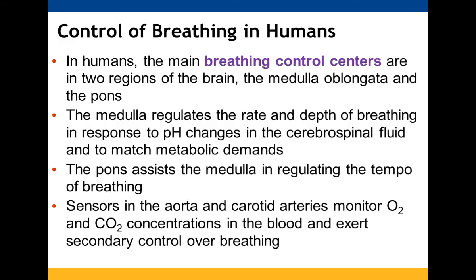There are a couple of regions in the brain — the medulla oblongata and the pons — that help to control breathing. The medulla regulates how often and how deeply you should breathe, based on signals from the cerebrospinal fluid. It also responds to your pH, since carbon dioxide can lower your pH and make you more acidic, and it depends on your metabolic needs. The pons assists with that regulation. There are also sensors in your aorta and carotid arteries that monitor oxygen and CO2 concentrations and can play a backup role in regulating breathing.